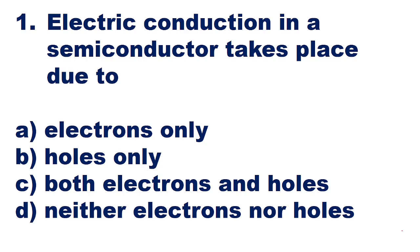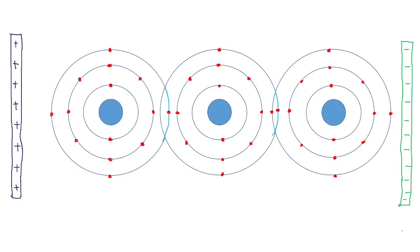To understand electric conduction — that is, the flow of charge carriers — in a semiconductor, let's take atoms of a semiconductor together and examine how exactly electric conduction takes place. Let's consider three atoms of silicon.